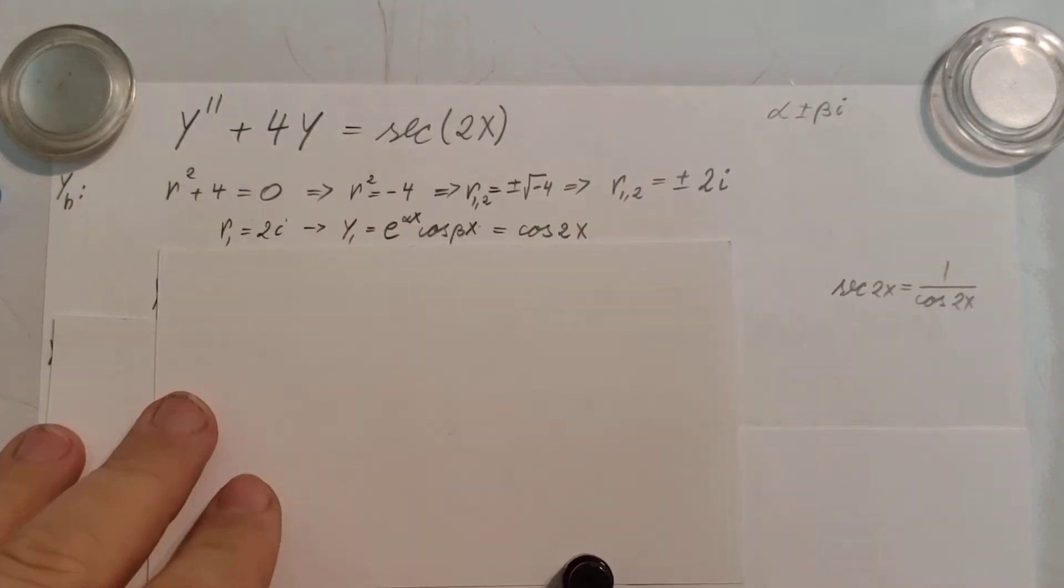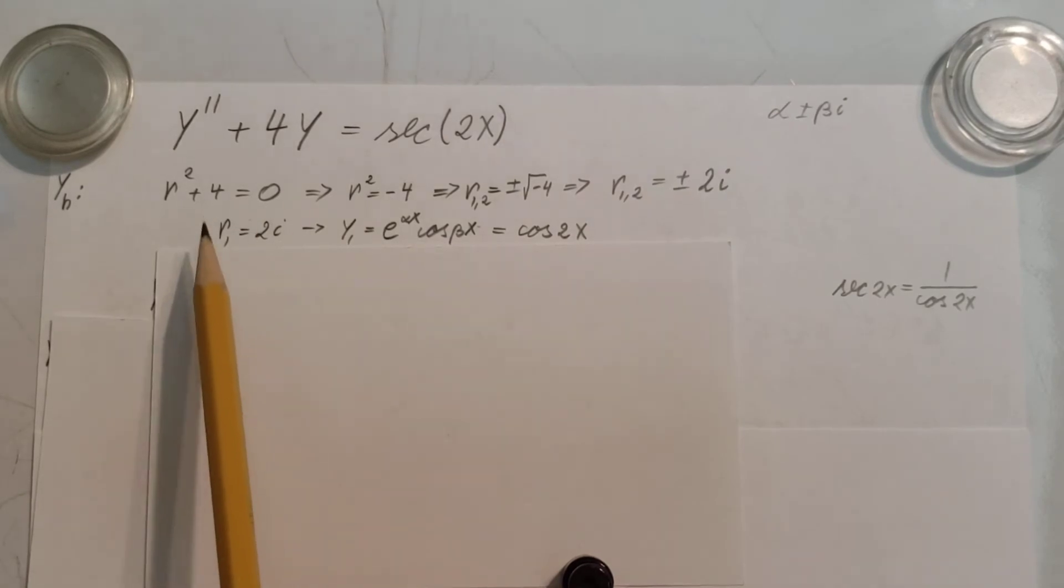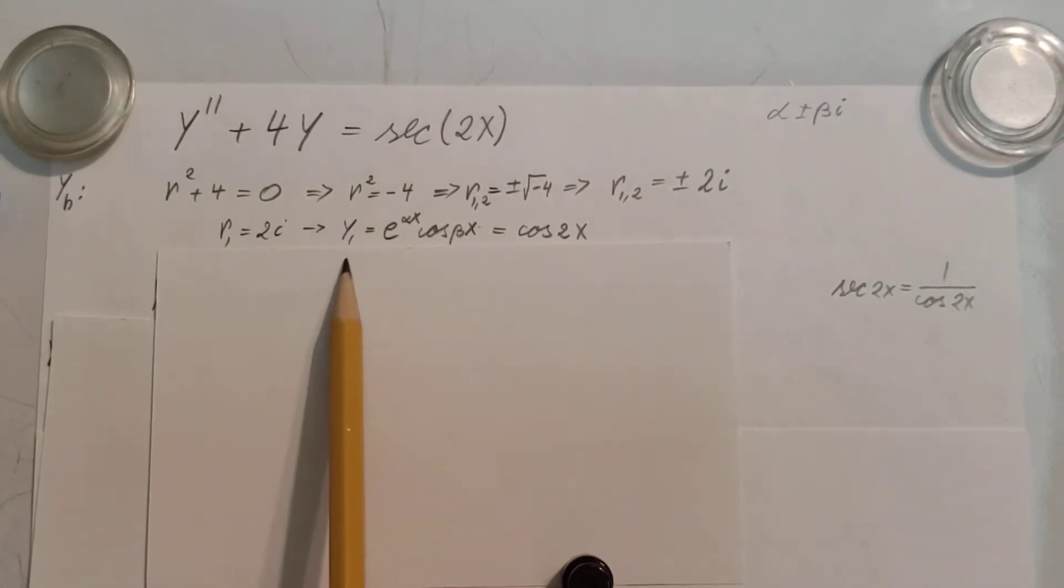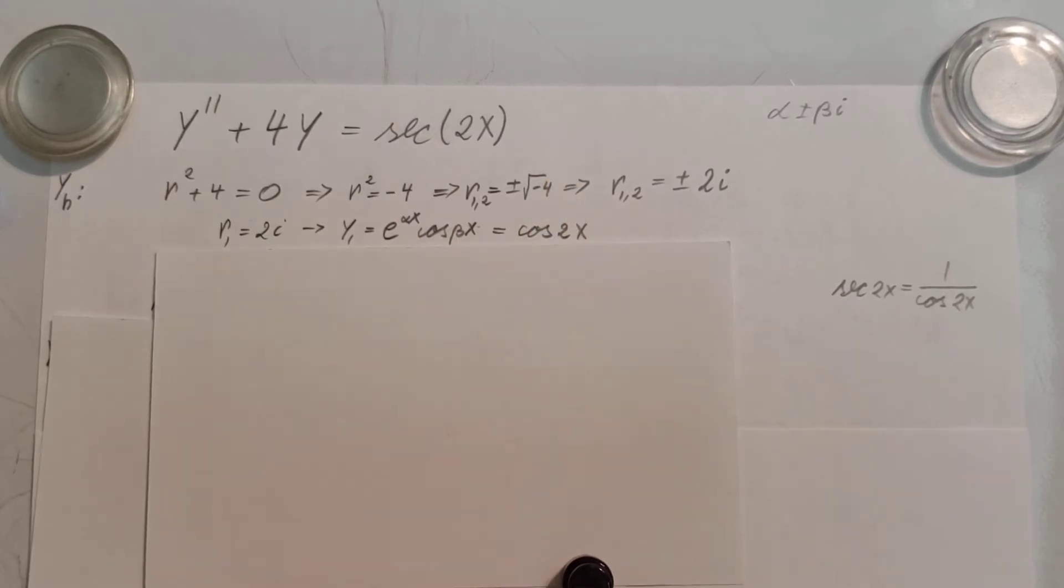So that's what I'm going to do. I'm taking the first root, r1 = 2i, and that's going to give me y1 = e^(αx)cos(βx). Alpha is my real part, which is 0, so this is 1. Cosine βx, β is my 2, so cosine 2x.